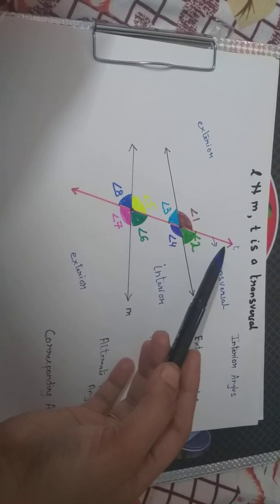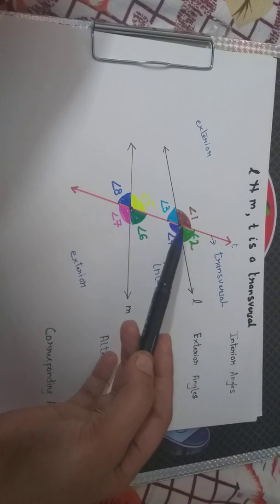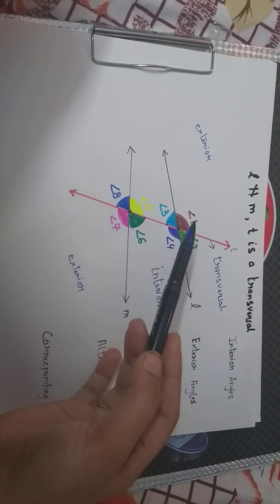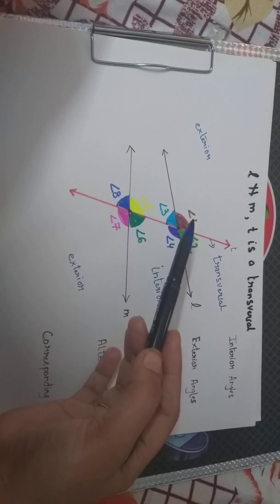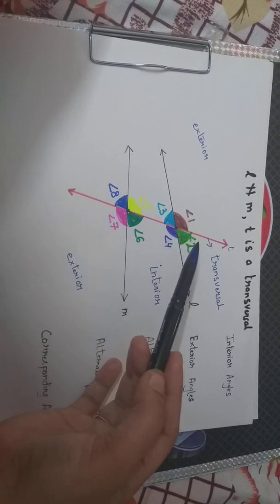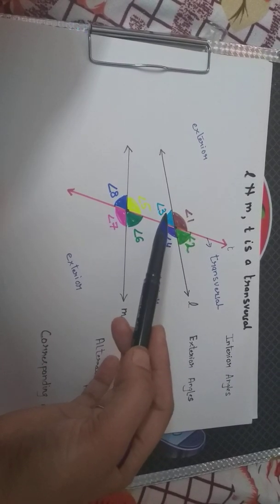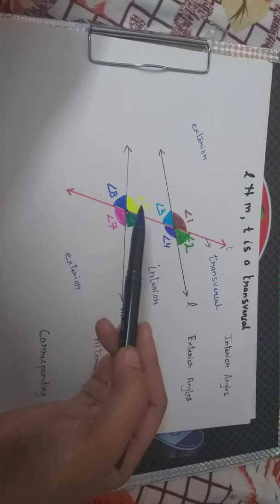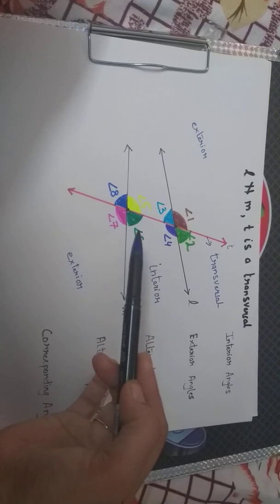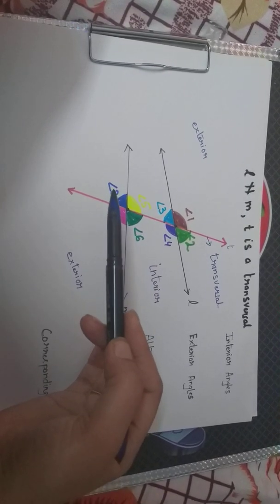As I have drawn a transversal over here, I am getting 8 angles: angle 1, angle 2, angle 3, angle 4, angle 5, angle 6, angle 7, and angle 8.